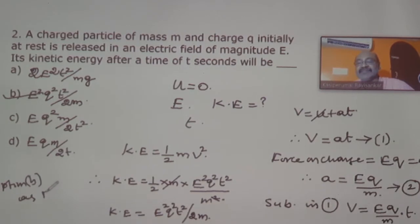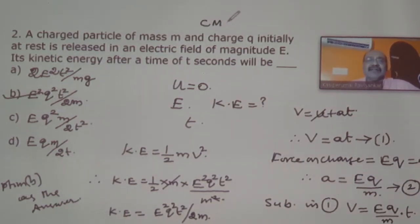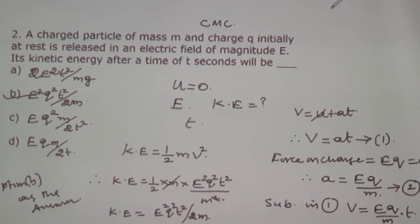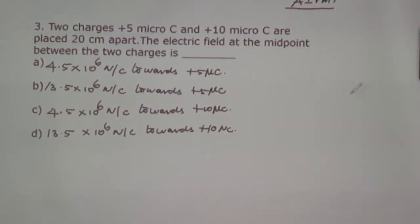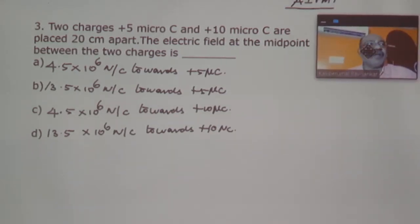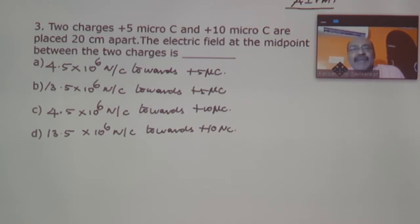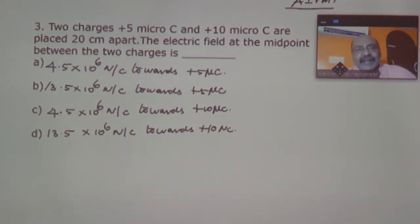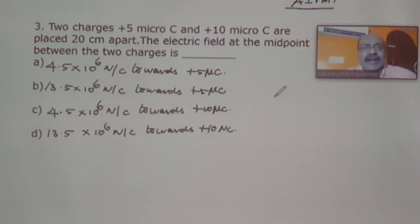Hope you understood. This was asked in the CMC question paper. Now question number three: you have two charges, one is plus 5 micro coulomb and another is plus 10 micro coulomb, placed 20 centimeters apart. The electrical field at the midpoint between the two charges is asked. This was asked in AIPMT previously.